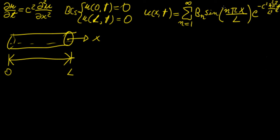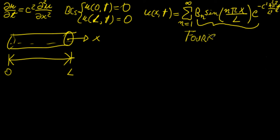What we're going to do now is find the coefficients bn of this equation to complete it. And if you notice, this is actually a Fourier sine series, as we have studied before.